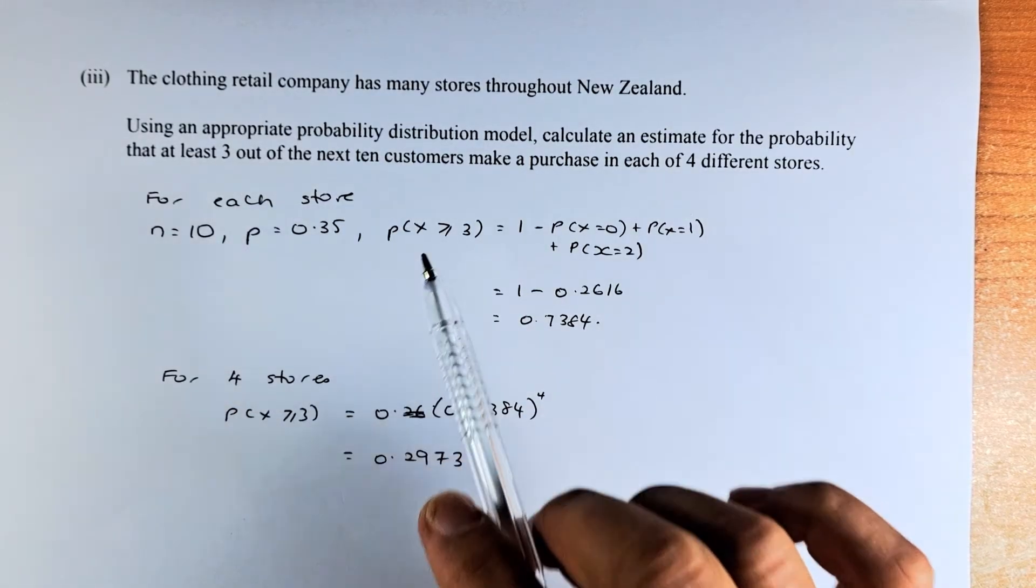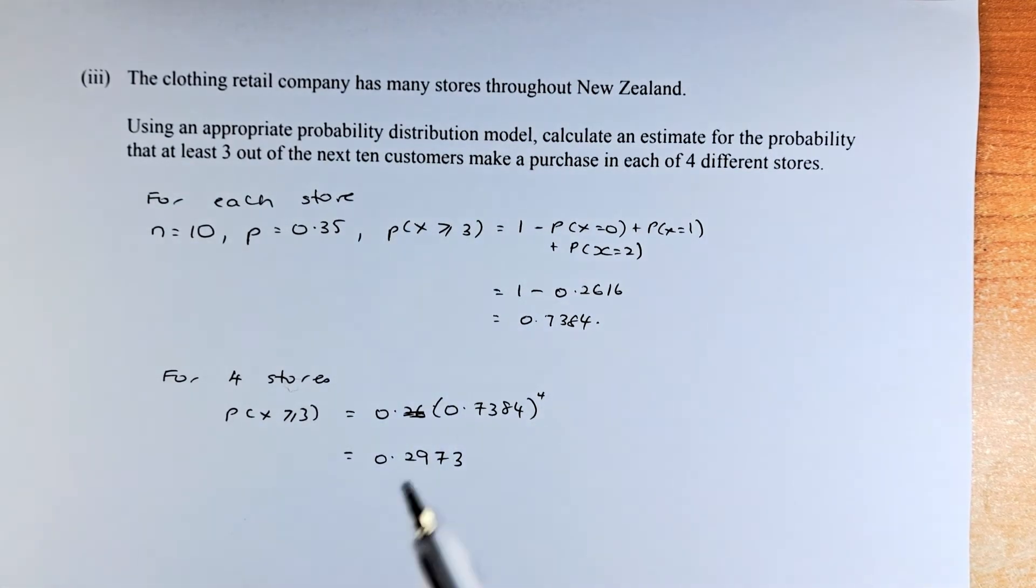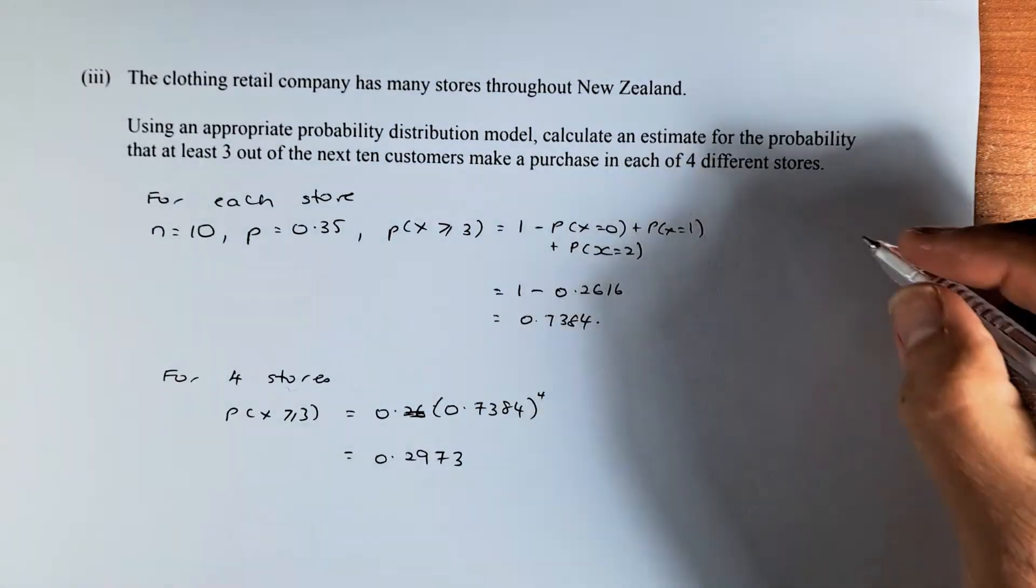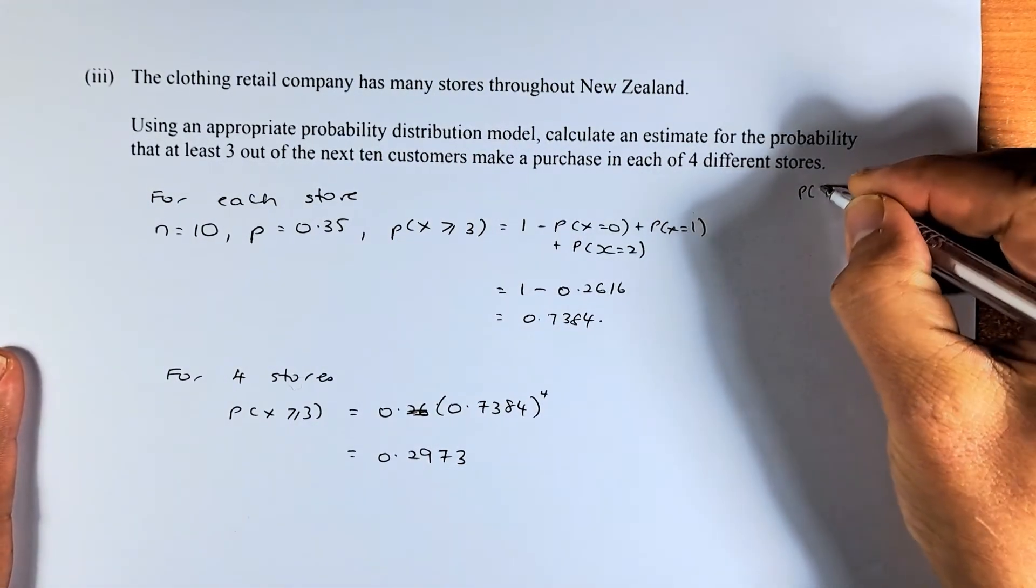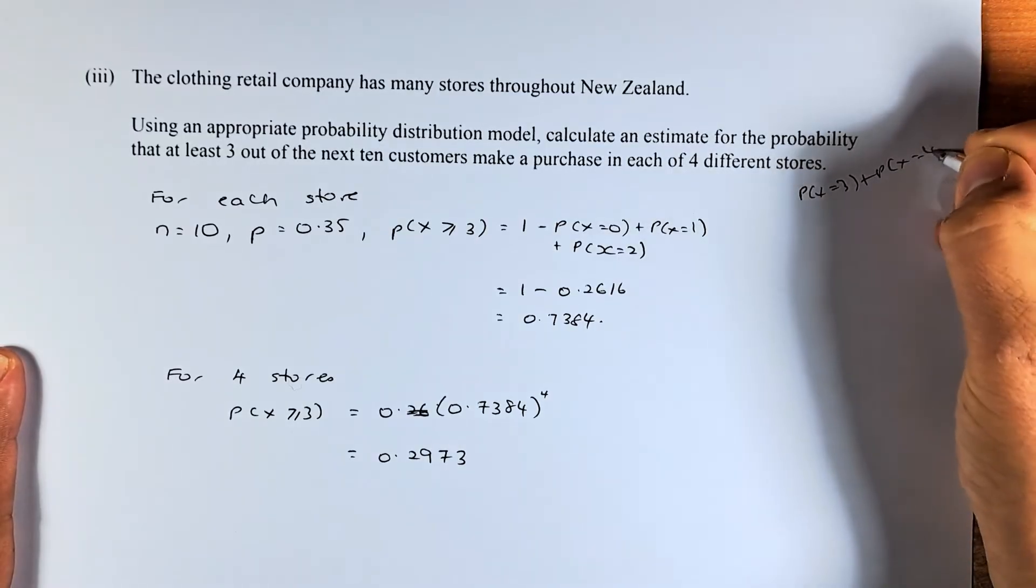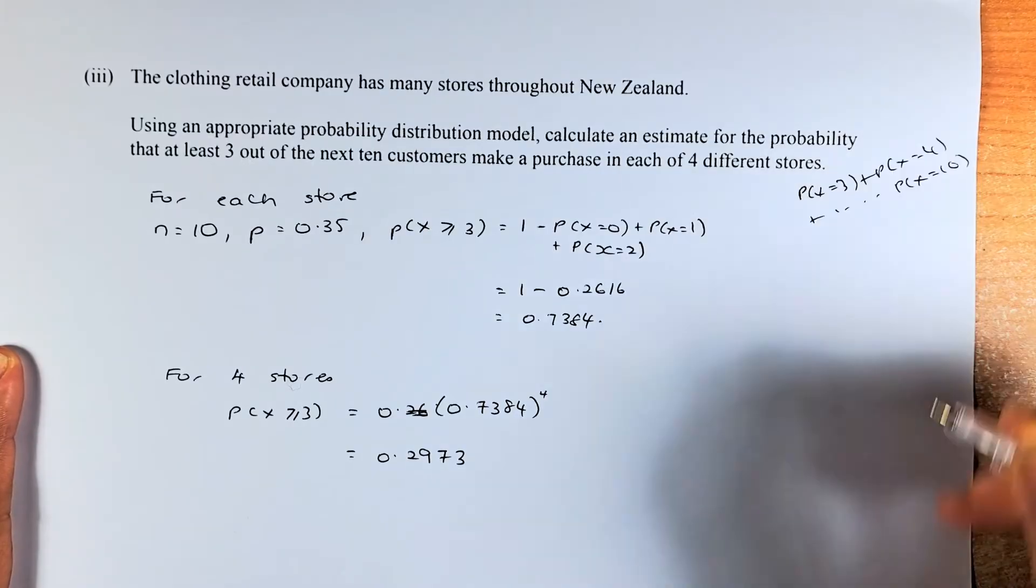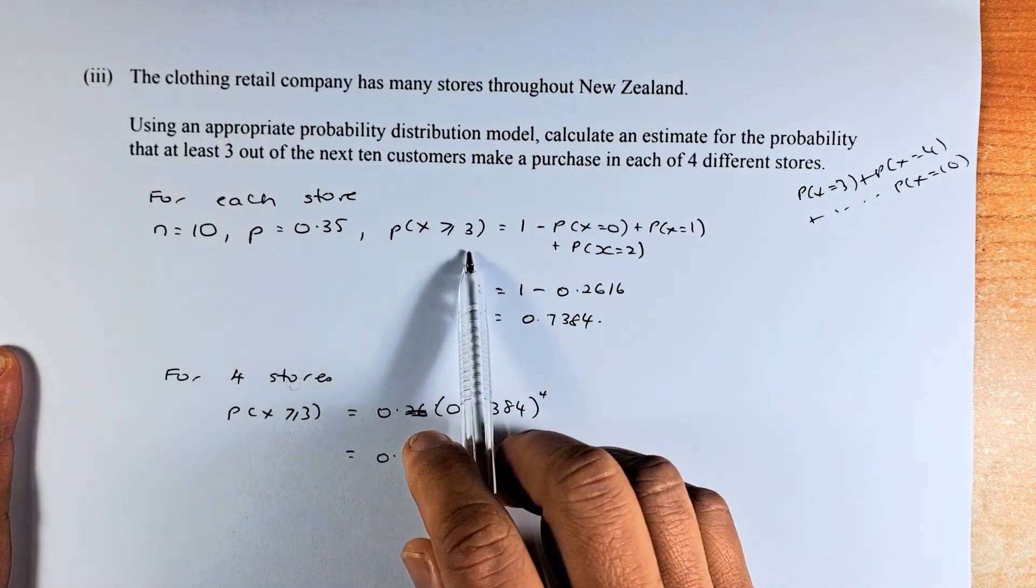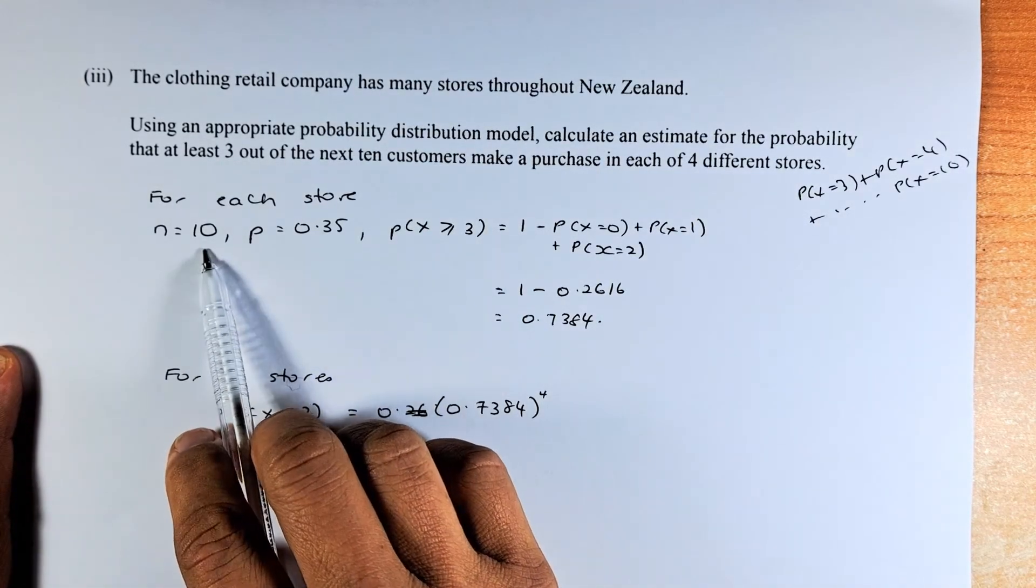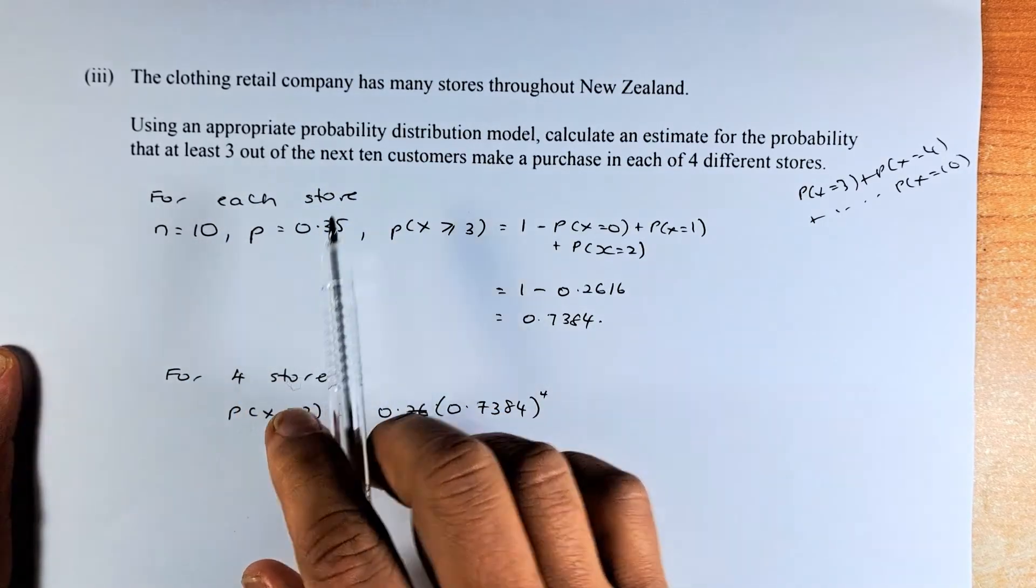So again, the same. 3 out of 10. This time it's at least 3. So the probability is between 3, 4, 5, 6, 7, 8, 9, 10. So we need to find P(X=3), P(X=4), all the way to P(X=10). So to calculate that probability, X greater or equal to 3, N is the same, still 10, and probability of success is 0.35 based on the previous example.